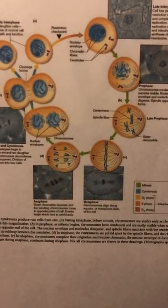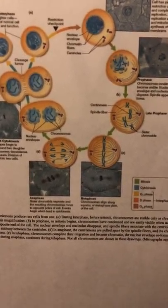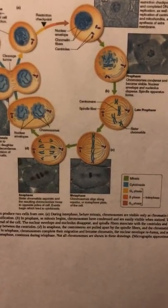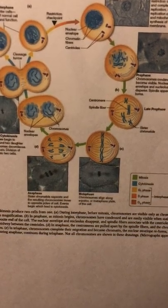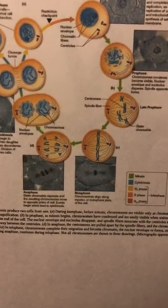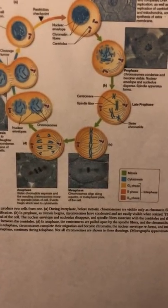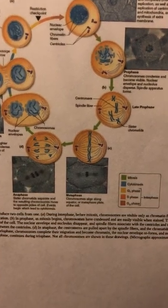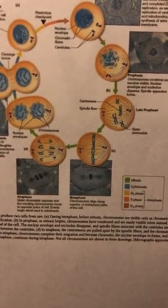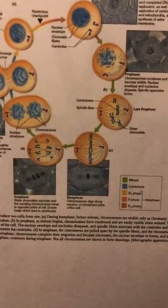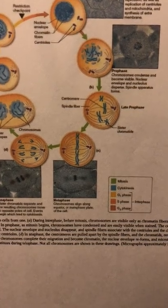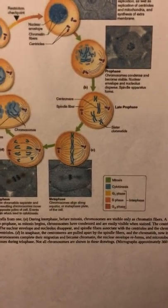I will be discussing objective 3.4, the cell cycle. A cell goes through a sequence of changes called the cell cycle. The cell cycle starts with a single cell and results in one parent cell and two daughter cells. The stages of the cell cycle are interphase, mitosis, and cytokinesis.